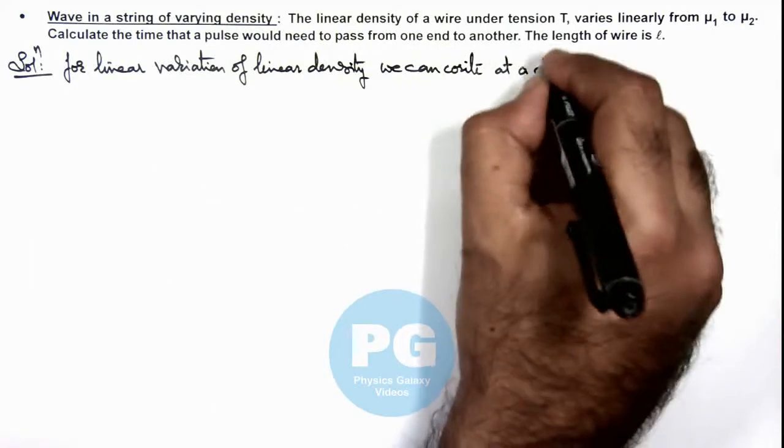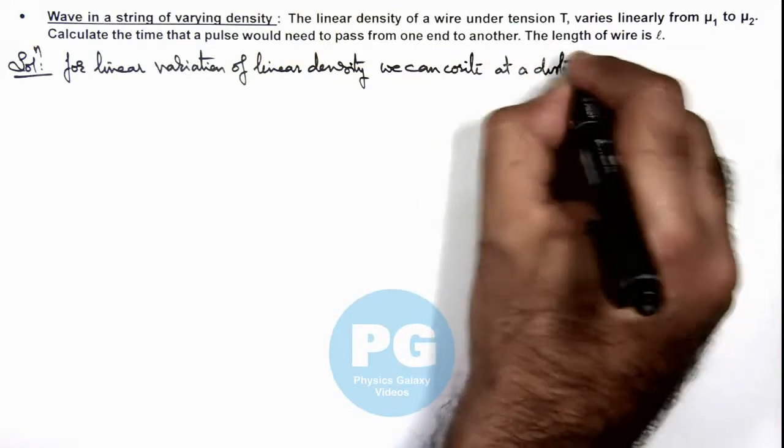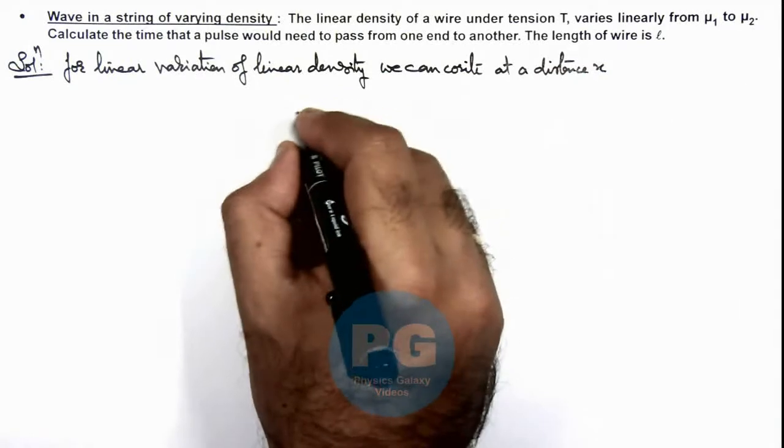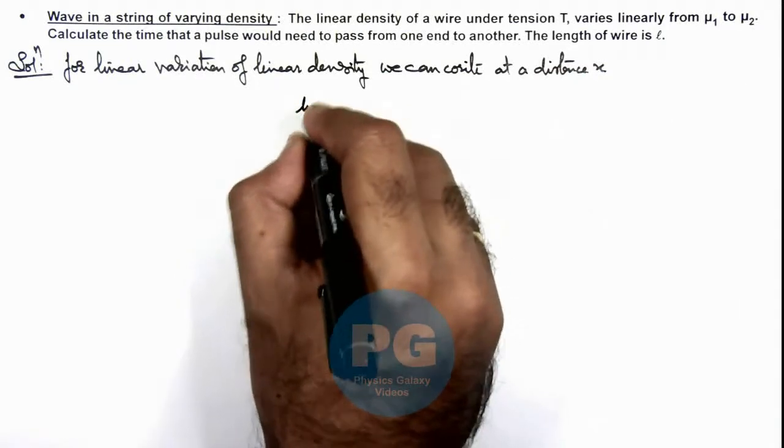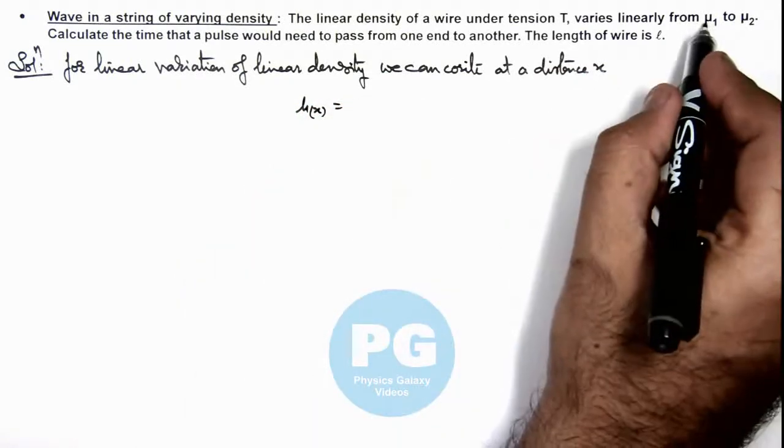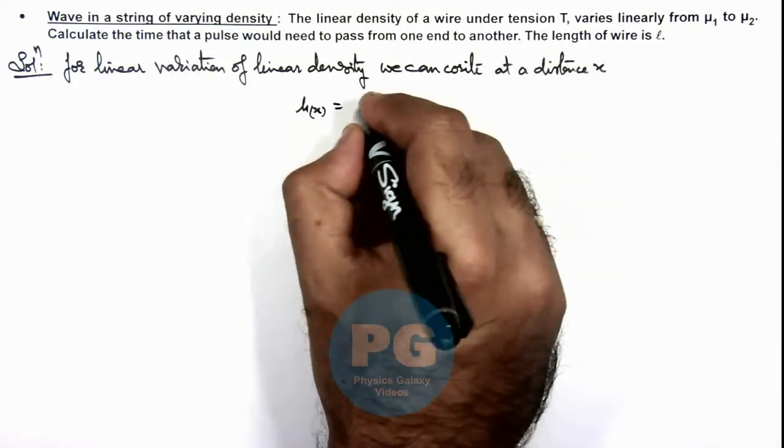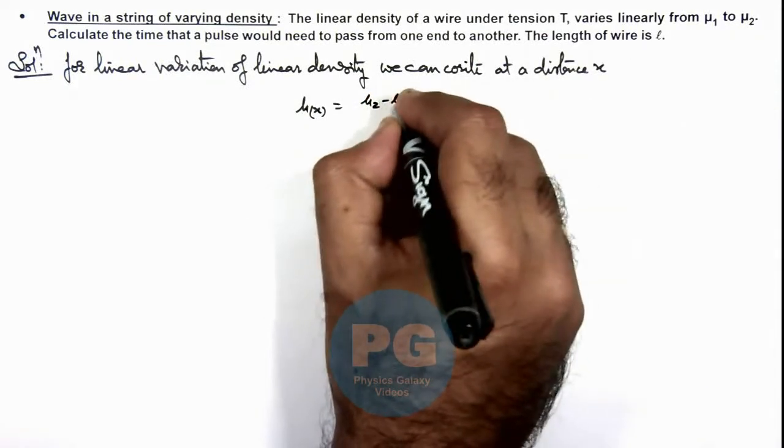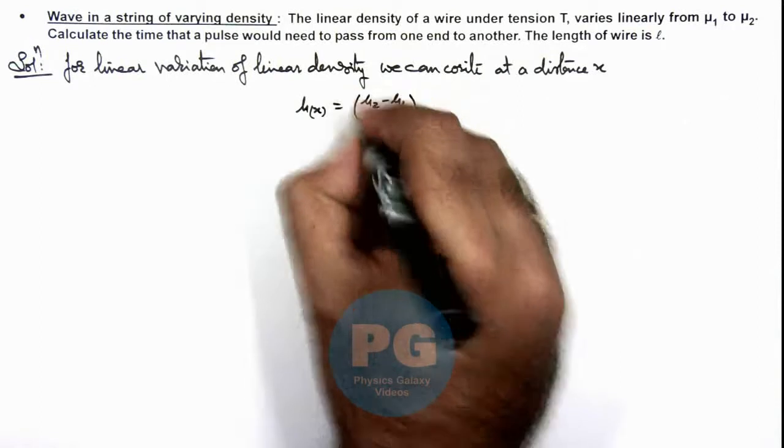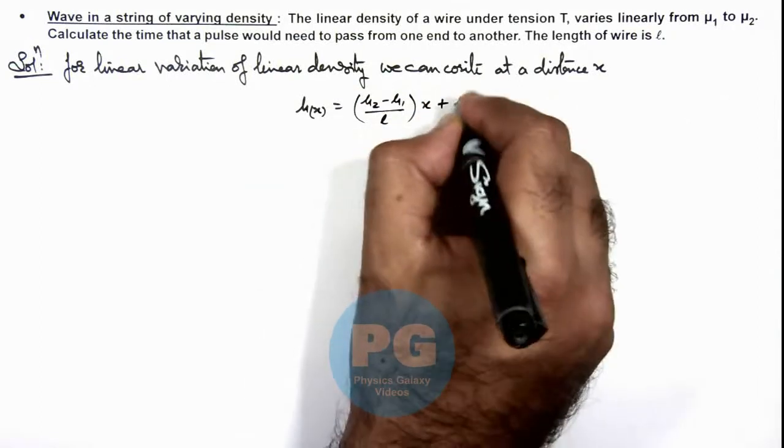We can write the linear density μ as a function of x. As it is varying from μ1 to μ2 linearly, we can write it: μ(x) = (μ2 - μ1)/L × x + μ1.